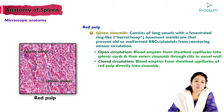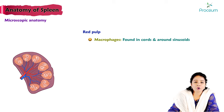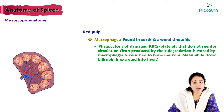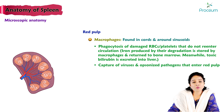The spleen contains both open and closed circulation. Macrophages found in the cords and around the sinusoids perform phagocytosis of damaged RBCs and platelets. Iron produced by this degradation is stored by macrophages and returned to the bone marrow, while toxic bilirubin is excreted into the liver. The spleen also captures viruses and opsonized pathogens that enter the red pulp.